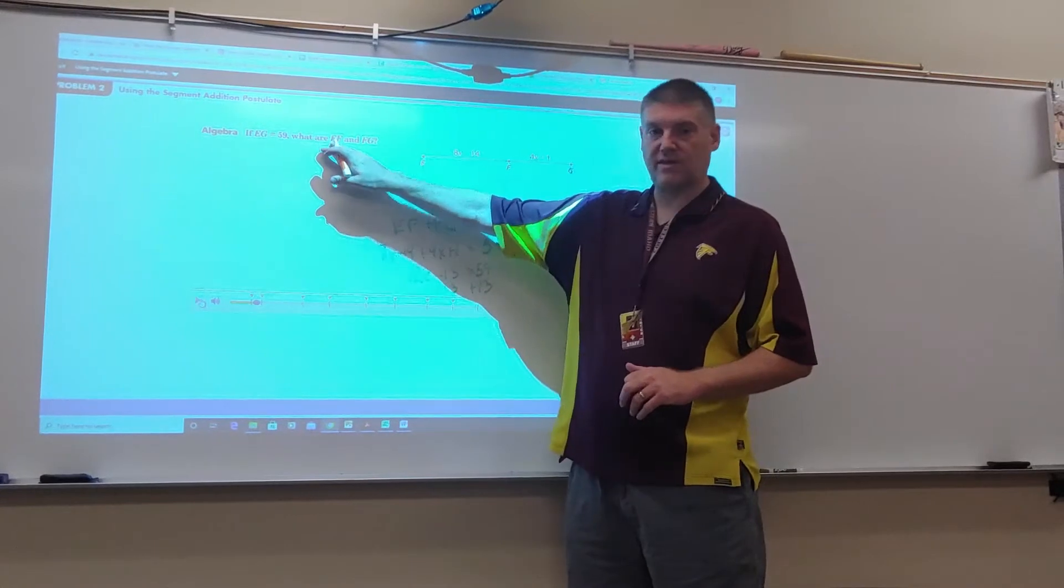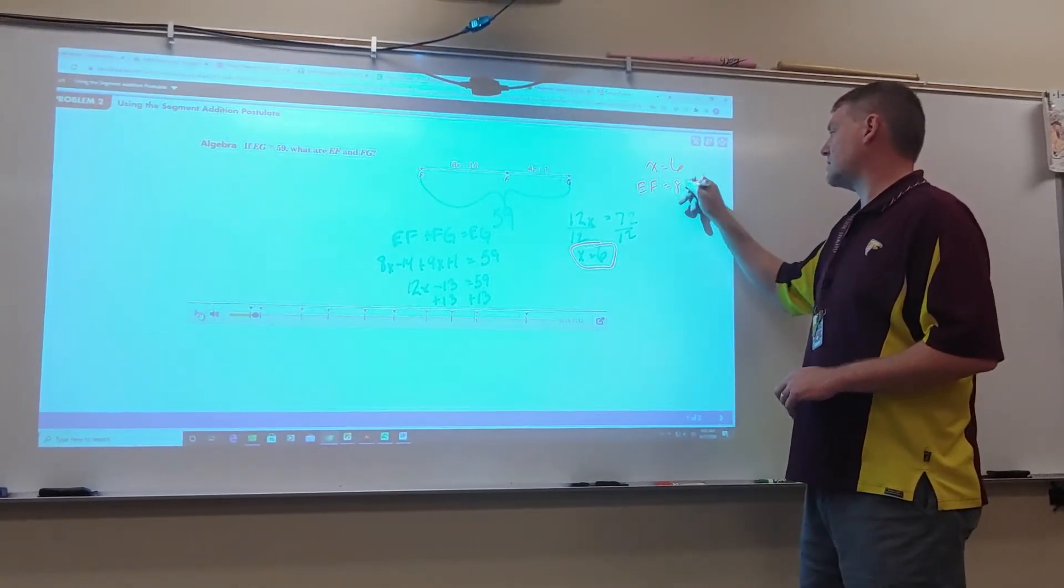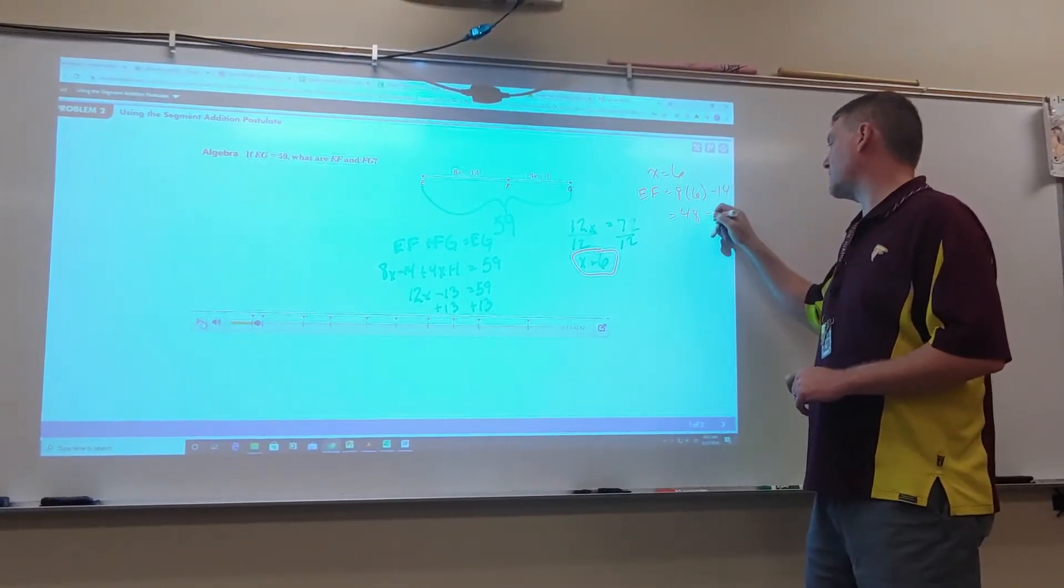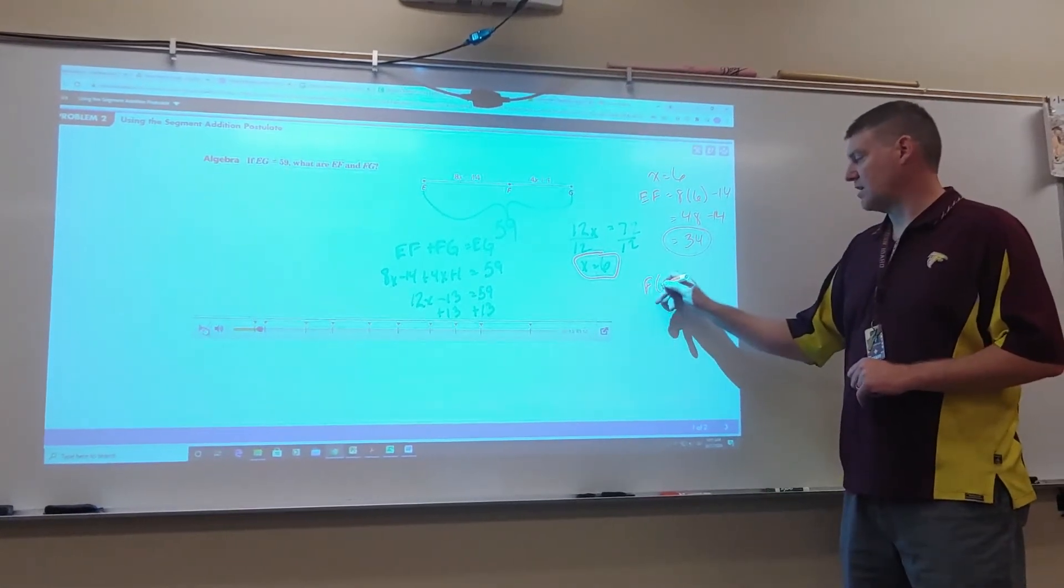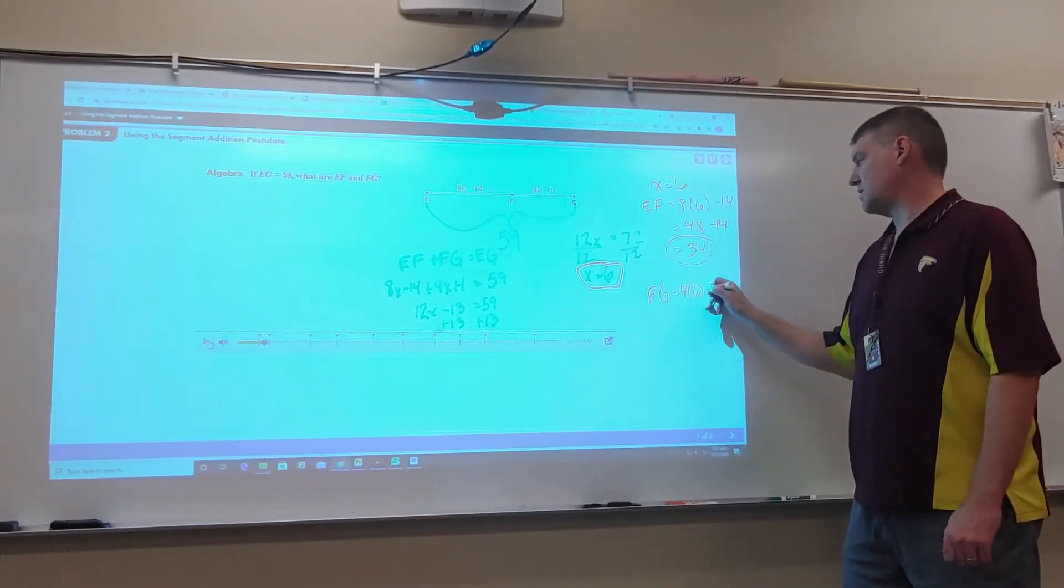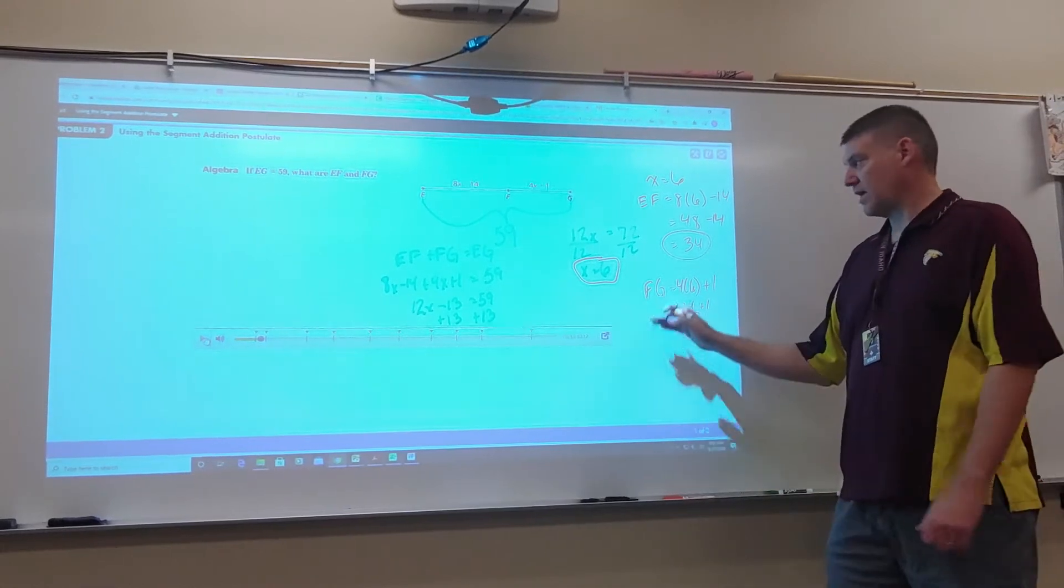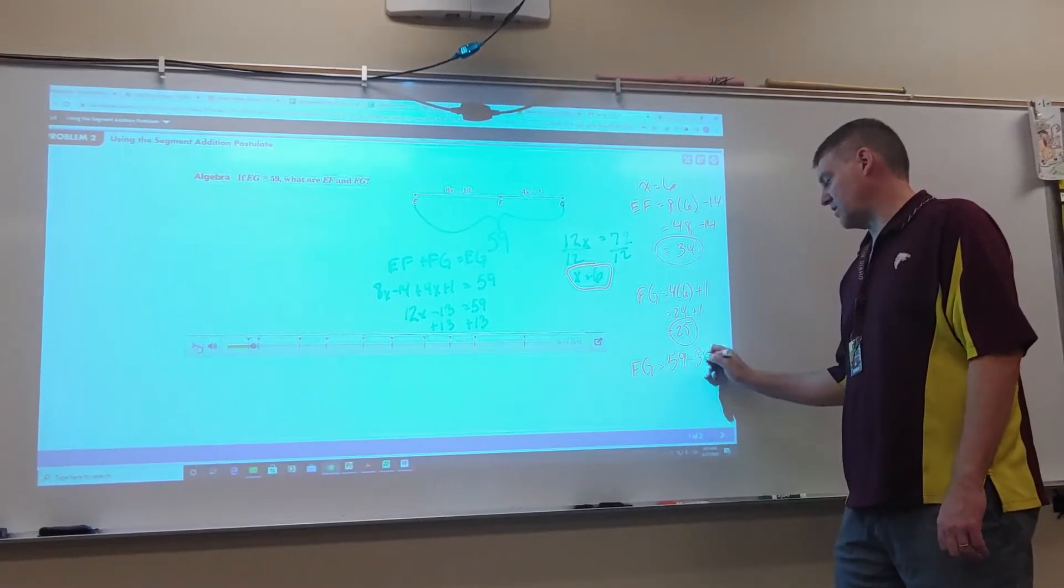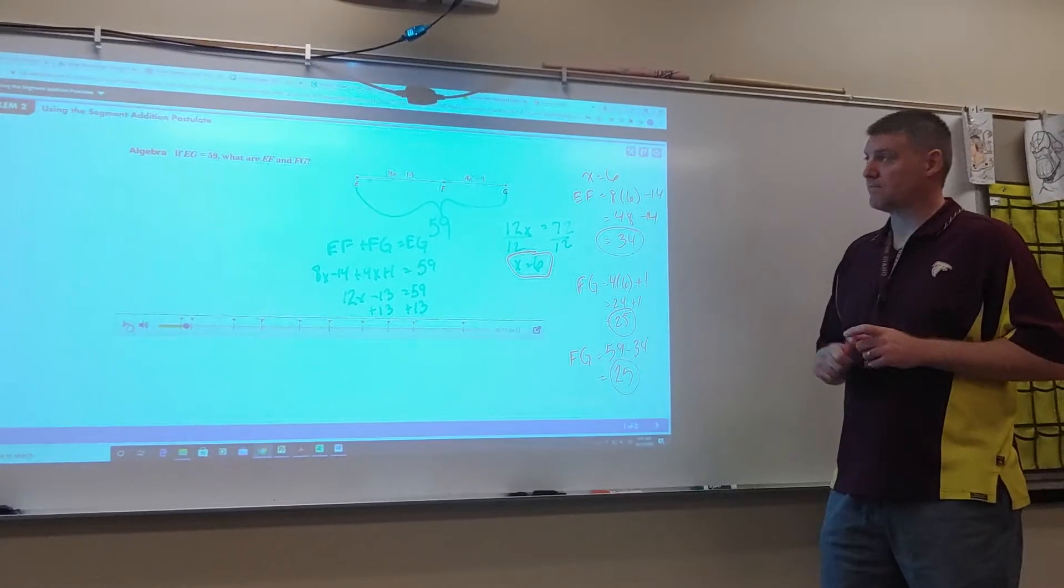It asked for the length of EF and FG. I need to take this 6 and plug it back in. EF is going to be 8 times 6 minus 14. 8 times 6 is 48 minus 14 is going to give me 34. Since I already have EF, I could find FG by a couple of different ways. I could take the 6, plug it in: 4 times 6 plus 1, 24 plus 1 equals 25. But I also could have went, well, FG is the difference between EG and EF. So I could have said it's 59 minus 34, which is 25. That's using that segment addition postulate.